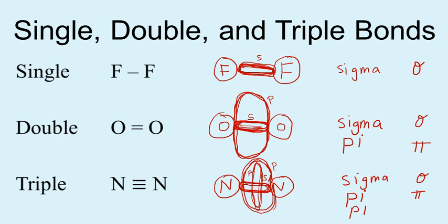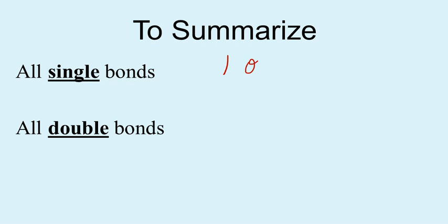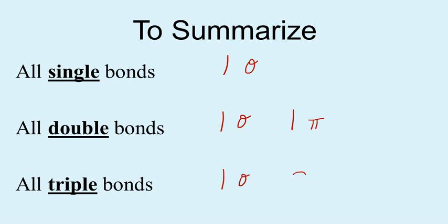This is basically the case for all single, double, and triple bonds. To summarize: all single bonds are composed of one sigma bond. That's the case for every single bond you'll ever encounter. All double bonds are composed of one sigma bond and one pi bond. And all triple bonds are composed of one sigma bond and two pi bonds.